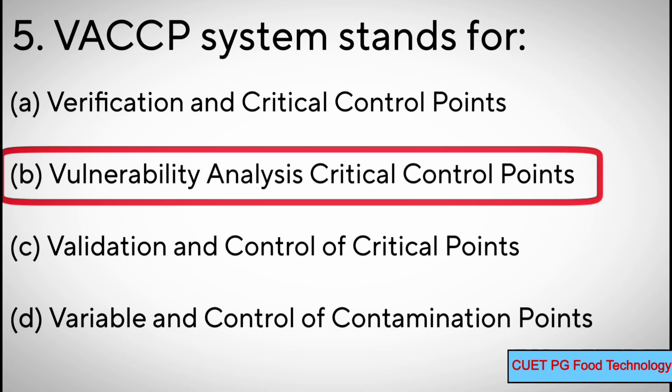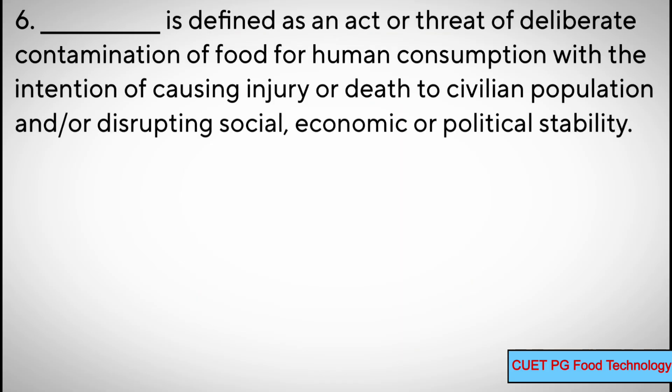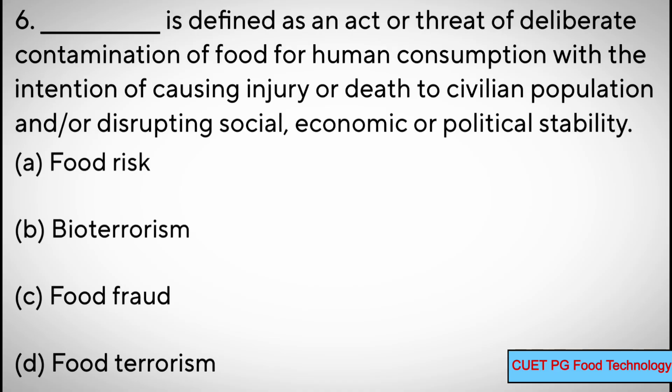Question number six: dash is defined as an act or threat of deliberate contamination of food for human consumption with the intention of causing injury or death to civilian population and disrupting social, economic, or political stability — options: A) food risk, B) bioterrorism, C) food fraud, D) food terrorism. Correct answer: D) food terrorism.